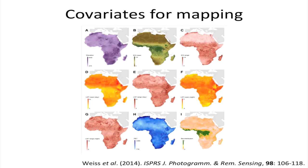We then have a whole set of covariates that we think might help explain the distribution of the disease. The analysis we use is called boosted regression trees. There are probably 10 to 12 different statistical families you could use to do this, and hundreds of variants of those. We put those together to produce a risk map, and I'll explain each part in a little more detail in the next couple of slides.